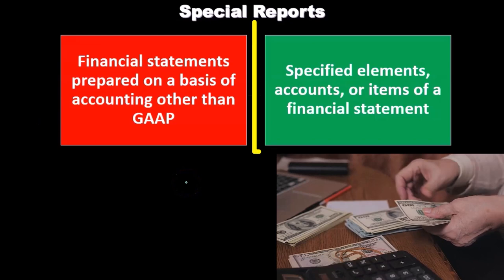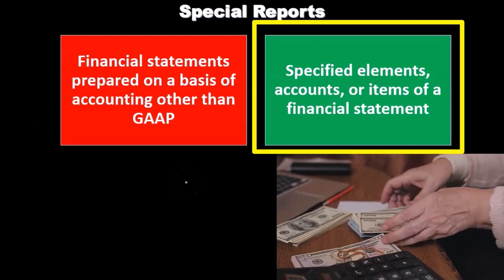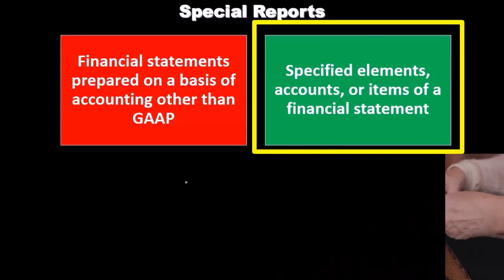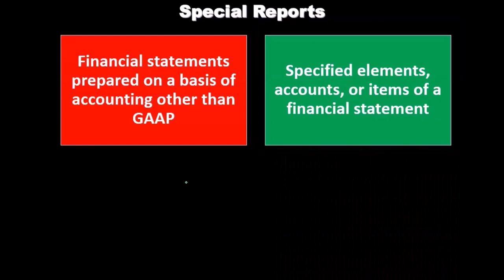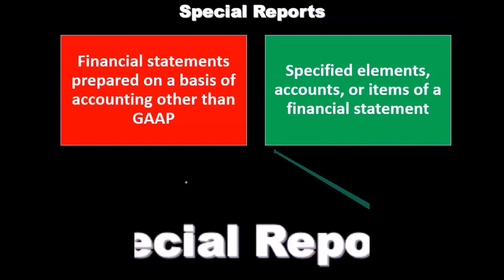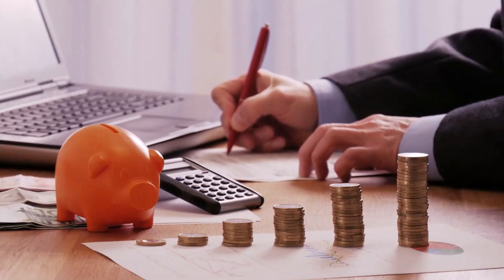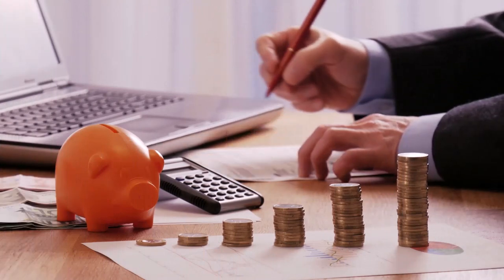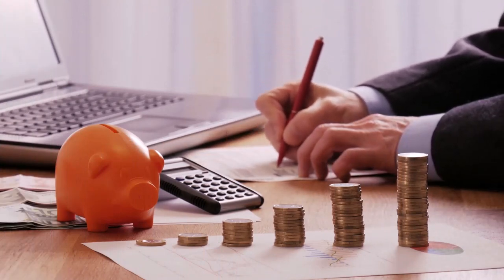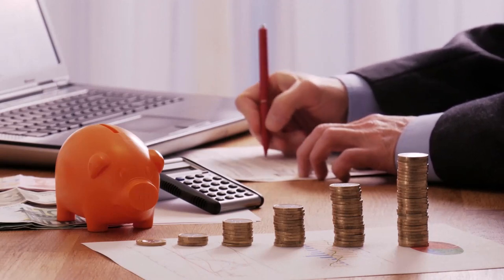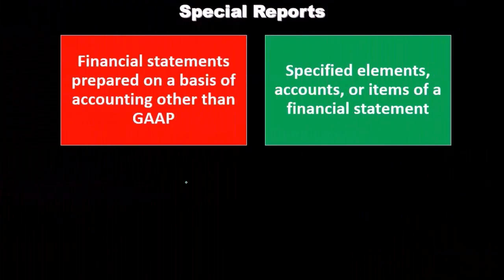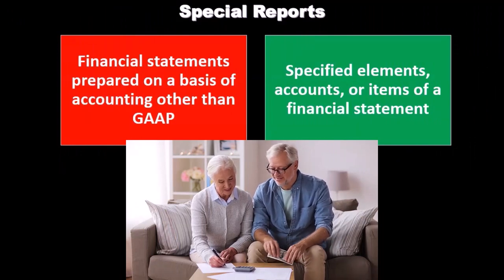Then we have specified elements, accounts, or items of the financial statements. We may be asked to give an opinion on certain accounts — not on the entire financial statements, but on specific elements within them. For example, they might ask us to audit accounts receivable and assess the fairness of accounts receivable given the allowance for doubtful accounts, or that type of engagement could cover something like a pension plan — is the pension plan valued correctly or reported properly?